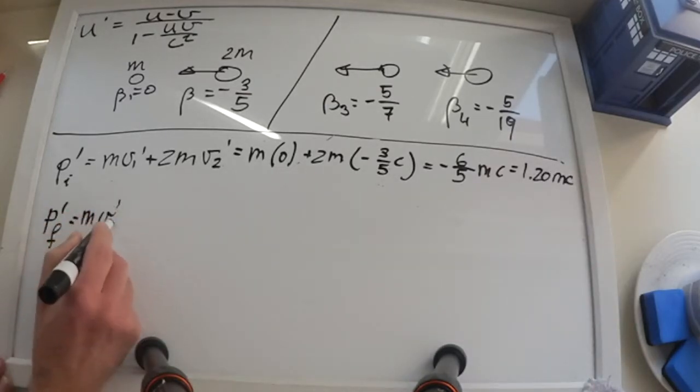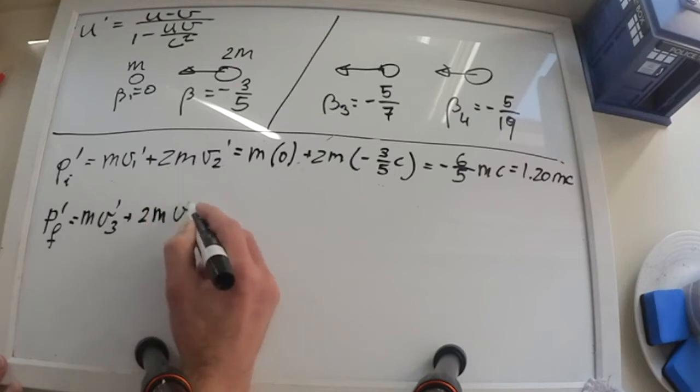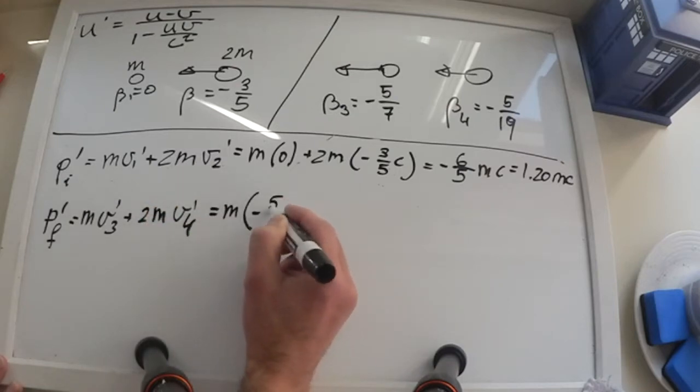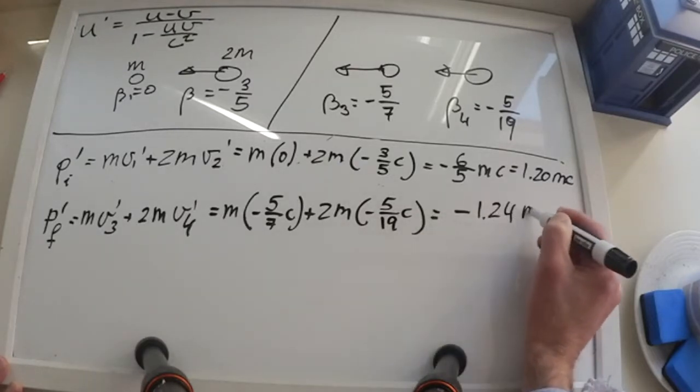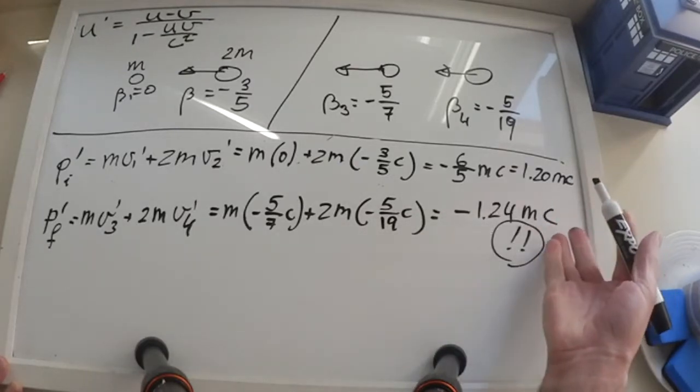If we do the same for the momentum after the collision, we get minus 1.24, which is not the same. So momentum is not conserved.